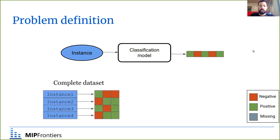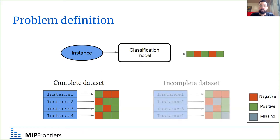Ideally, to train this classification model, we have a complete dataset where for each instance we have all the possible correct or negative labels. However, in many cases we have incomplete datasets due to the procedure of collecting them, and moreover we don't know which of these labels are the missing labels.